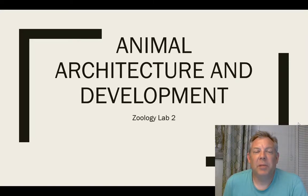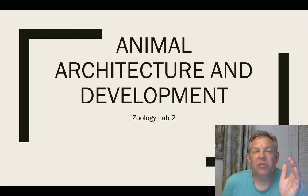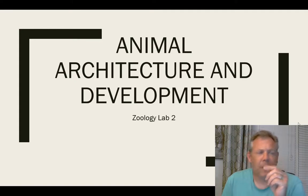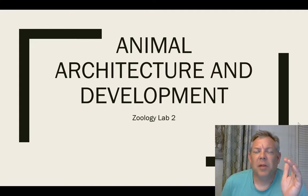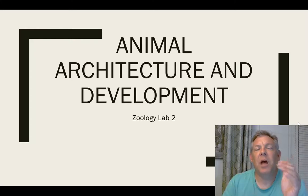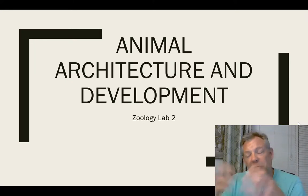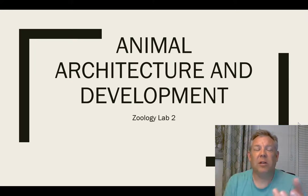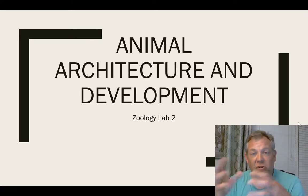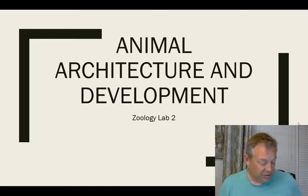We're ready to talk about our next lab. In this lab, we're going to discover some basic information on animal architecture and development. This is information we're going to use the rest of the semester as we learn about the different animal phyla. It's some important vocabulary terms and things that help us when we do our dissections and when we try to look at these phyla. It helps us understand the evolutionary relationship among all these different groups.